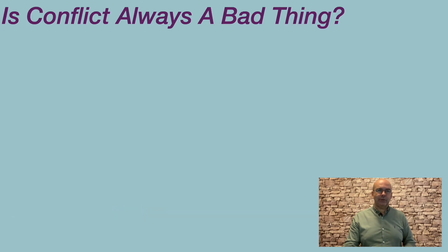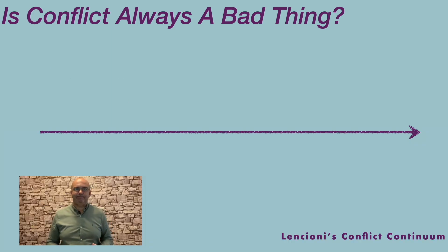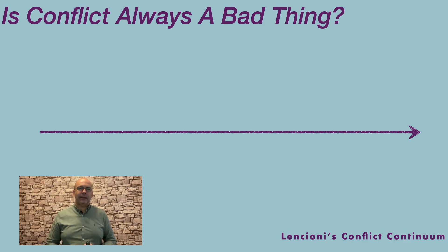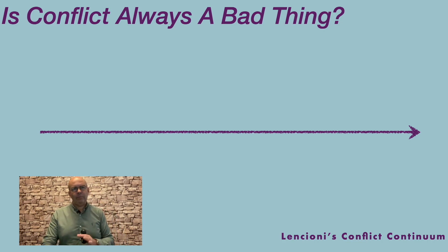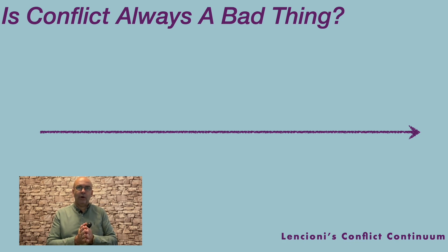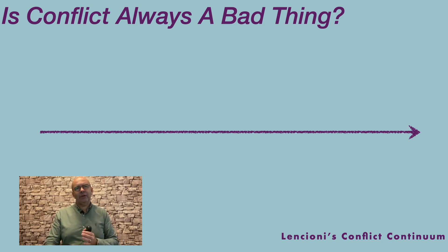Is conflict always a bad thing? There are probably examples we can think of involving bad conflict — arguments, fights, finger pointing, raised voices, even military conflicts at the big end of the scale. However, when we talk about conflict at the basic level, we're talking about some sort of disagreement or contravention in terms of opinions, values, how we treat each other. So we can look at this as a continuum.